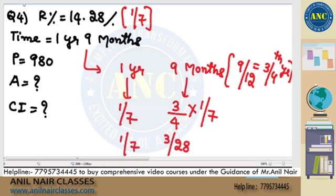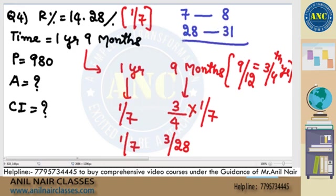For the first year: on 7, there is 1 increase, so it becomes 8. For the partial year: on 28, there is 3 increase, so it becomes 31. Now, 7 × 28 = 196, and 31 × 8 = 248.